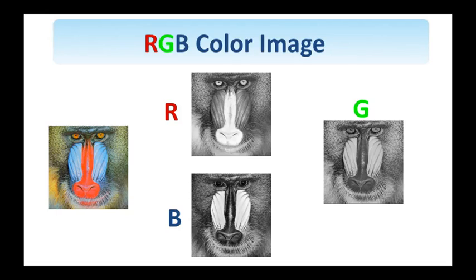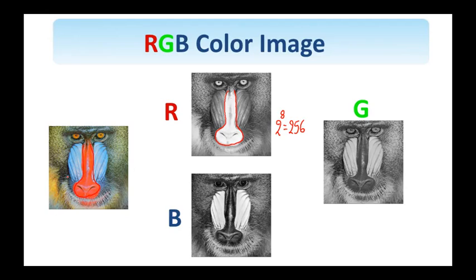There are different ways to represent the color image, one of which is shown here in terms of three different channels — the red, green, and blue channels. This is an RGB decomposition of the image. Each channel is a black and white image using 8 bits, so 256 different values per channel, and 8 bits per channel times 3 gives 24 bits to represent the color image. The nose of the mandrill is quite red, so the pixel values in the red channel are quite high — white is represented by values close to 255, while darker values are closer to 0.